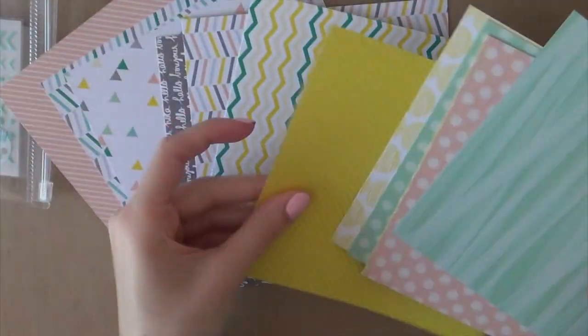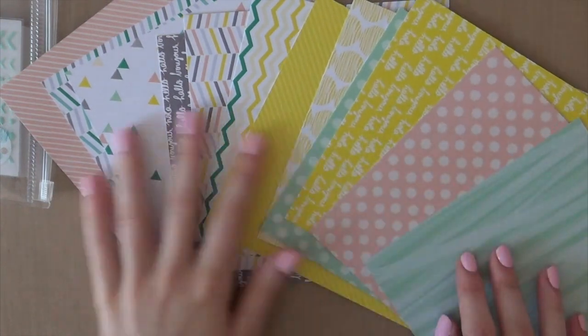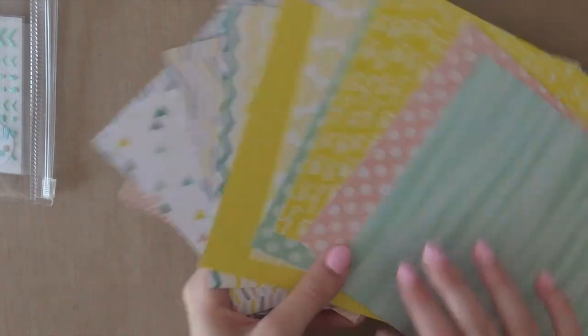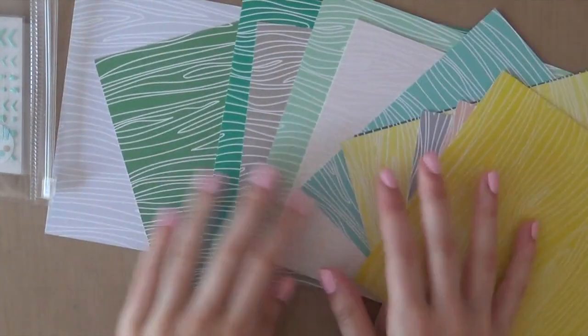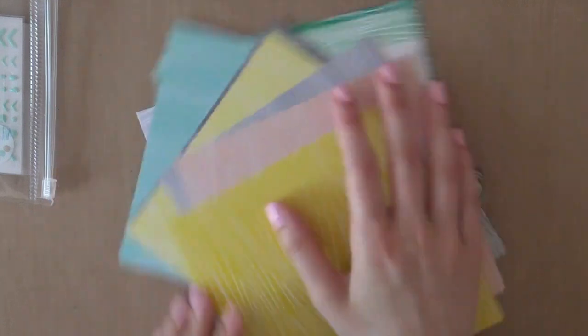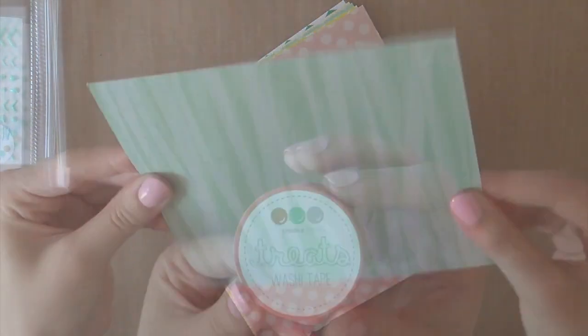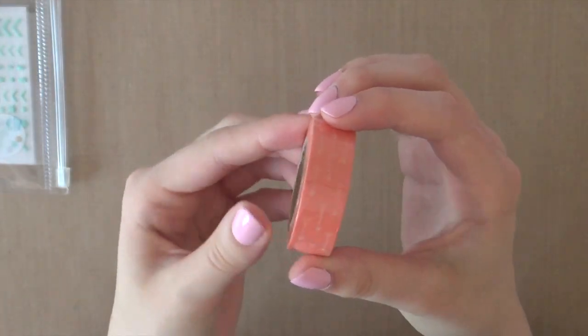This kit comes with 12 double-sided pattern papers and I just really love all of the cute patterns and the very soft colors. They're just really my cup of tea and what I really like are those woodgrain patterns. This paper is very high quality and it's also quite thick.